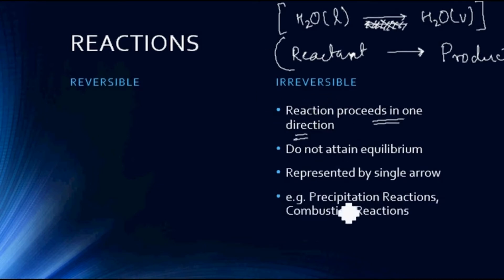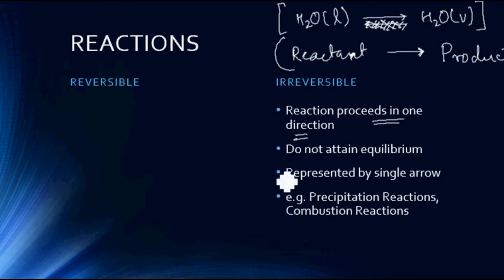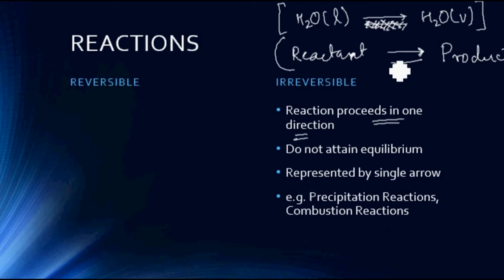Some examples of irreversible reactions are precipitation reactions and combustion reactions. These two types generally — though not always — tend to be irreversible in nature, because the product separates out from the reactant in a way that it cannot change back to the reactant. Hence there is no backward reaction. When the backward reaction is absent, the reaction is an irreversible reaction.